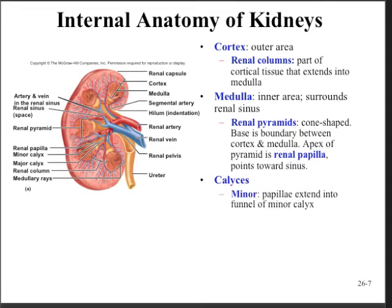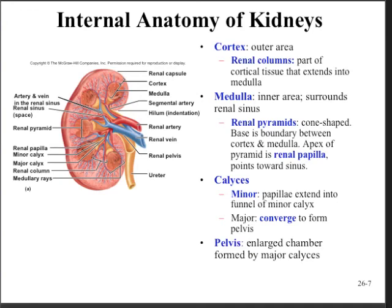The calyxes are little cup-shaped structures that collect the urine as it flows out of the renal papilla. The major calyxes converge to form the renal pelvis, which is the enlarged chamber formed by the major calyxes. The ureter exits at the hilum and connects to the urinary bladder. An important thing to understand about the ureter is that, although it has some elasticity due to transitional epithelia lining its lumen, it is considerably narrower than the urethra — and this will come into play when we talk about the production of kidney stones.